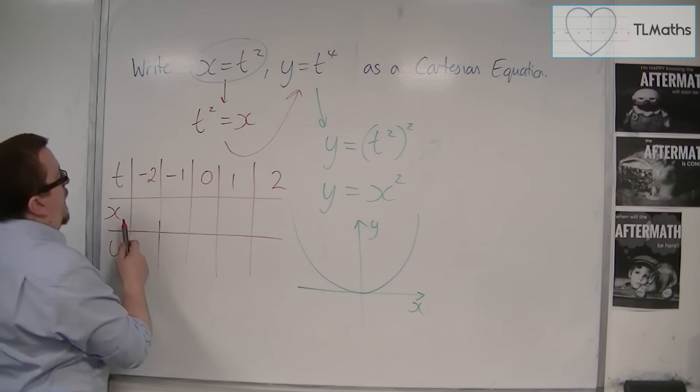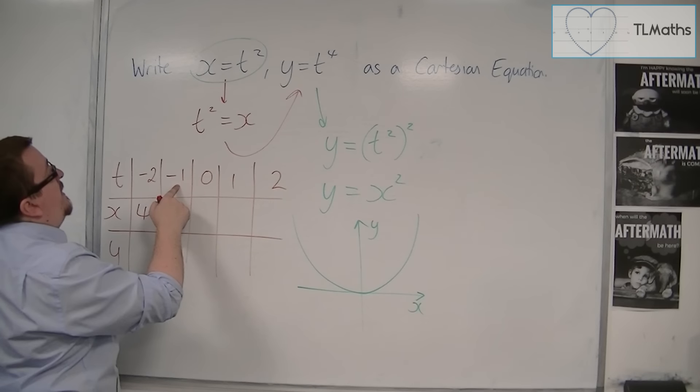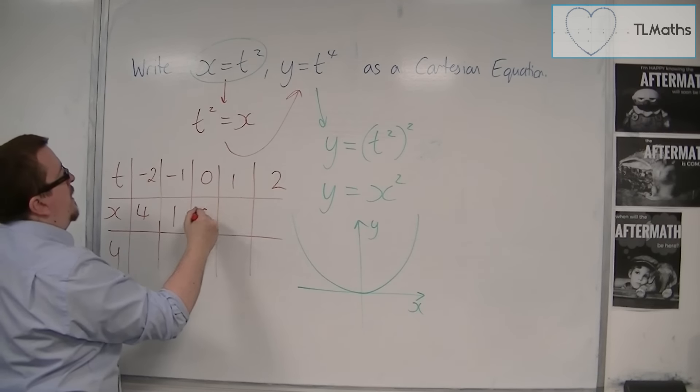Now, when t is minus 2, we get x is 4. When t is minus 1, we get 1. We get 0, 1, and 4 there.